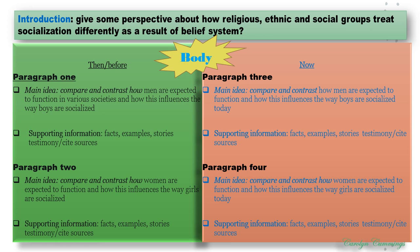Then in paragraph two, we compare and contrast how women are expected to function and how this influences the ways girls are socialized. We provide facts, examples, or other kinds of support — you don't need to provide every type of evidence. Choose one or two kinds of evidence to explain the argument or points you are making in that paragraph. Again, this is the essence of a paragraph: you have your main idea and you have supporting information.